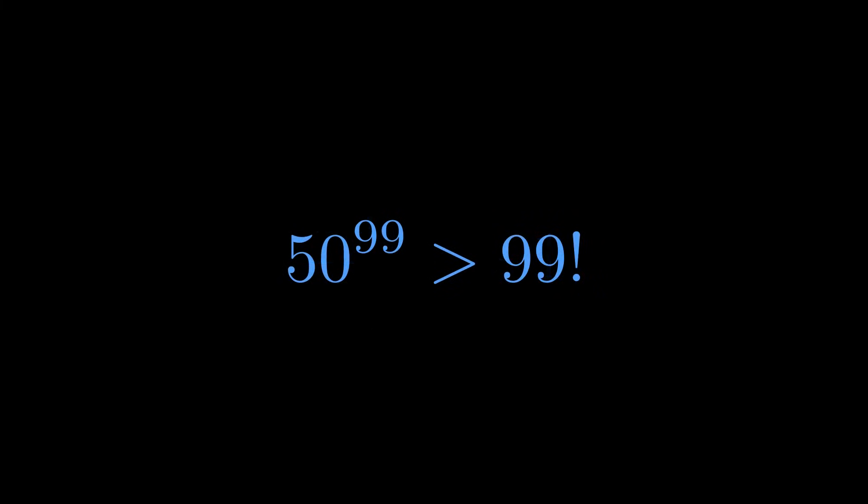And there we have it: 50 to the 99th is larger than 99 factorial. What I love about this is how we went from a completely impossible calculation to a beautiful, simple argument about symmetry. Thanks for watching. If you enjoyed this proof, give it a like and subscribe for more beautiful mathematics.